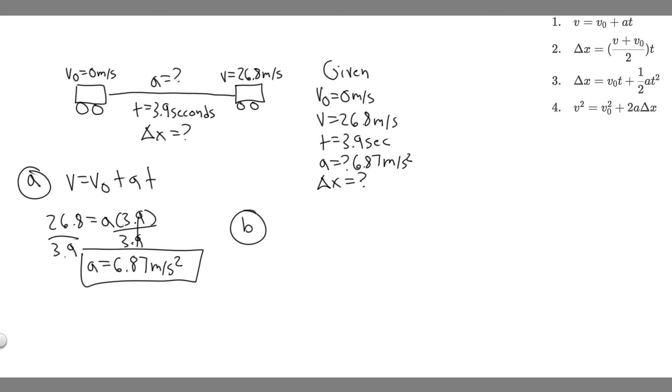And the one I'm going to use is this one right here. Delta x equals v sub zero times t plus one half A t squared. Because notice we have the initial velocity, we have the time, we have the acceleration, which is what we just solved for, and then time again. So all we got to do is plug it in.